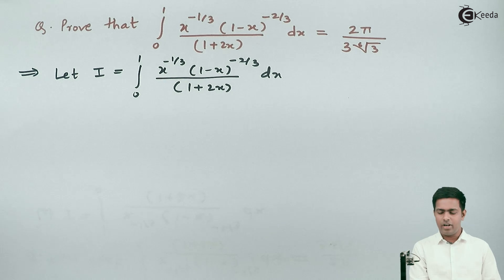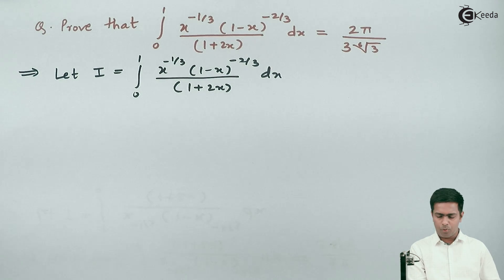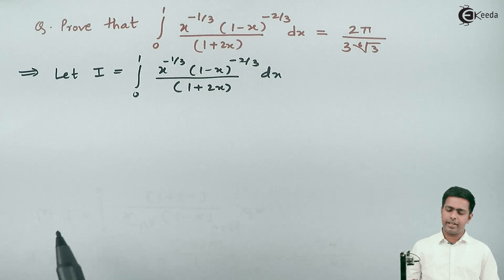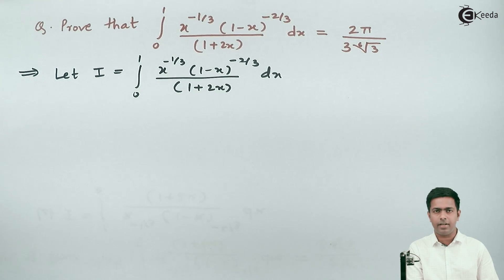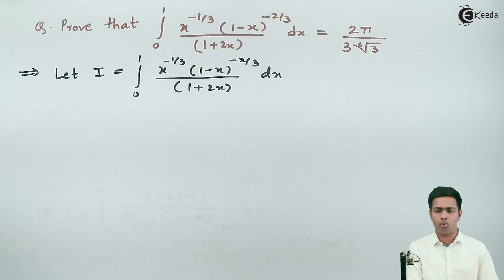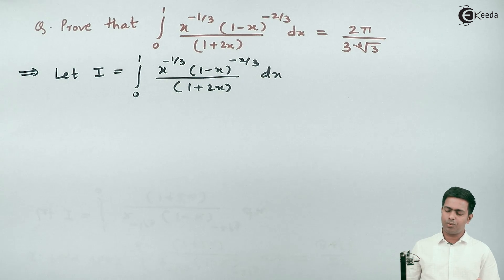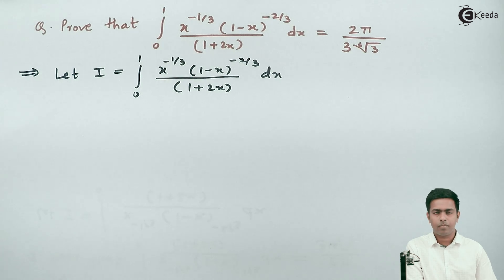Hi friends, let's see a problem based on the definition of the beta function. We have to prove that the integration from 0 to 1 of x raised to minus 1/3 times (1 minus x) raised to minus 2/3, whole divided by (1 plus 2x), dx is equal to 2π upon 3 times the 6th root of 3.